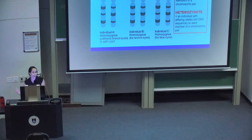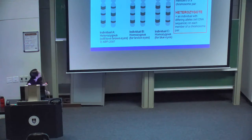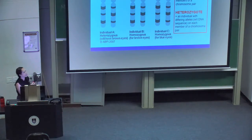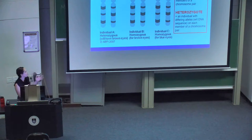The terms homozygous and heterozygous are important here. A homozygote is an individual with the same allele on both members of a chromosome pair, whereas a heterozygote has two different alleles. Individual A, who is heterozygous with one blue-eye allele and one brown-eye allele, will have brown eyes due to dominance. Individual B, homozygous for brown eyes, also has brown eyes. Individual C, homozygous for the blue-eye allele, will have blue eyes as both copies are recessive.